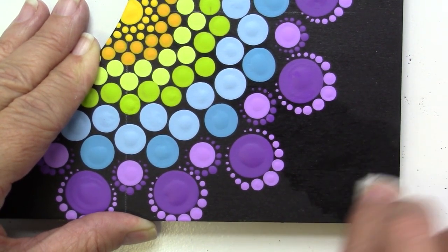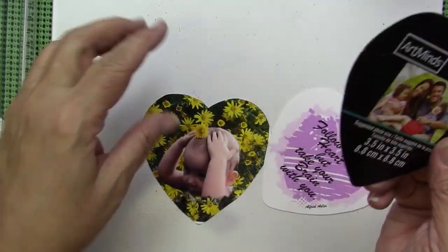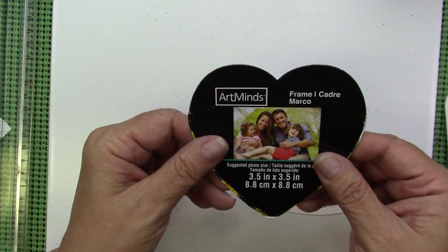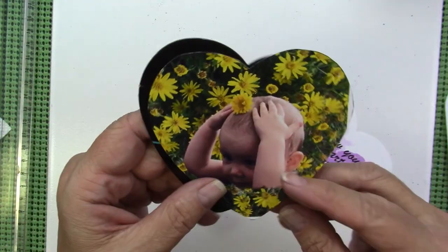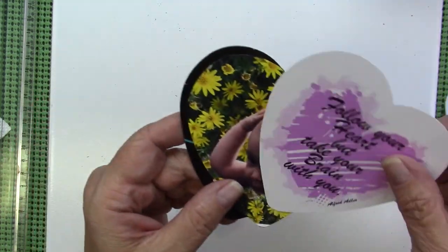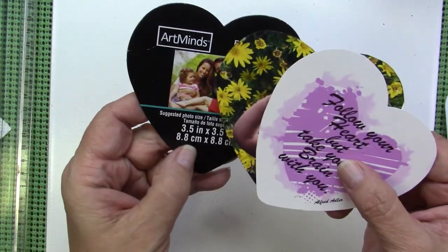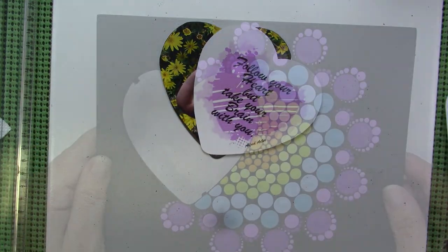Here's the little heart insert that we saved. And I'll just use it to cut a picture. Or if you don't want to use a picture, you can use a little saying. And I think both of those are going to look really pretty. So let's go ahead and put the picture in so you can see what it looks like.